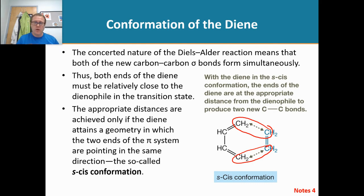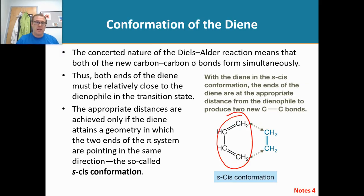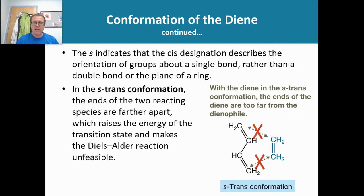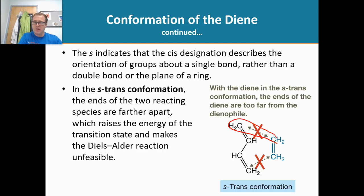But when you take a look at the diene in its S-trans conformation, shown here, you can see how the distance between those carbons is now longer. And that distance prevents the reaction from occurring.